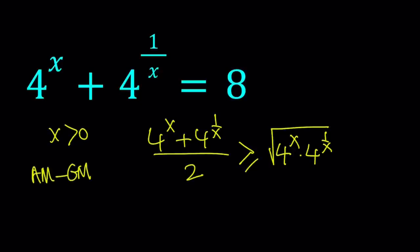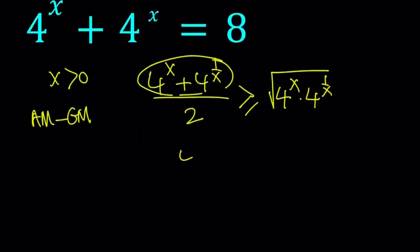Now, we do know that 4 to the power x plus 4 to the power 1 over x is equal to 8. So we can replace this with 8. And that's going to give us 4 is greater than or equal to square root of 4 to the power x plus 1 over x, since we can add the exponents when the bases are equal. Great. So how does this help us?